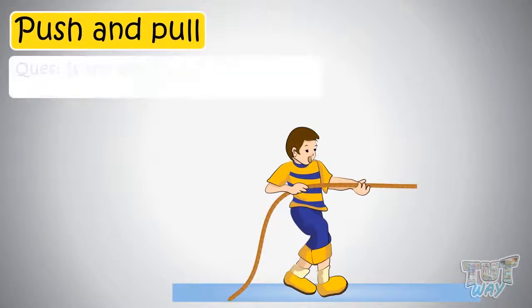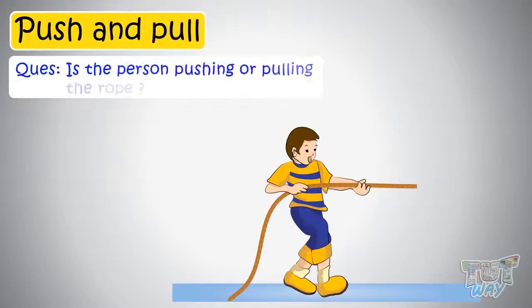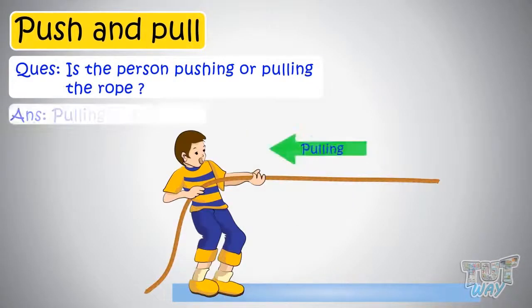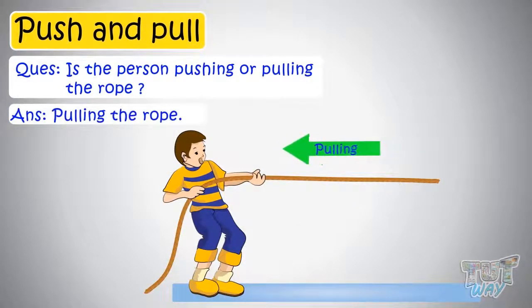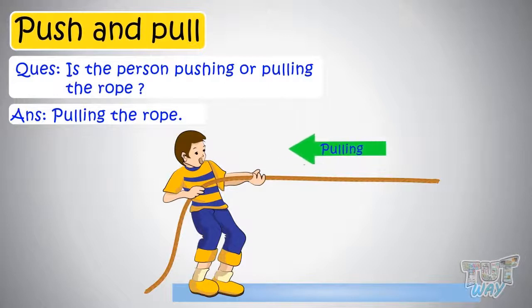Here is another example — see the picture. Is the person pushing or pulling the rope? He is pulling the rope. Now let's learn some more types of movements.